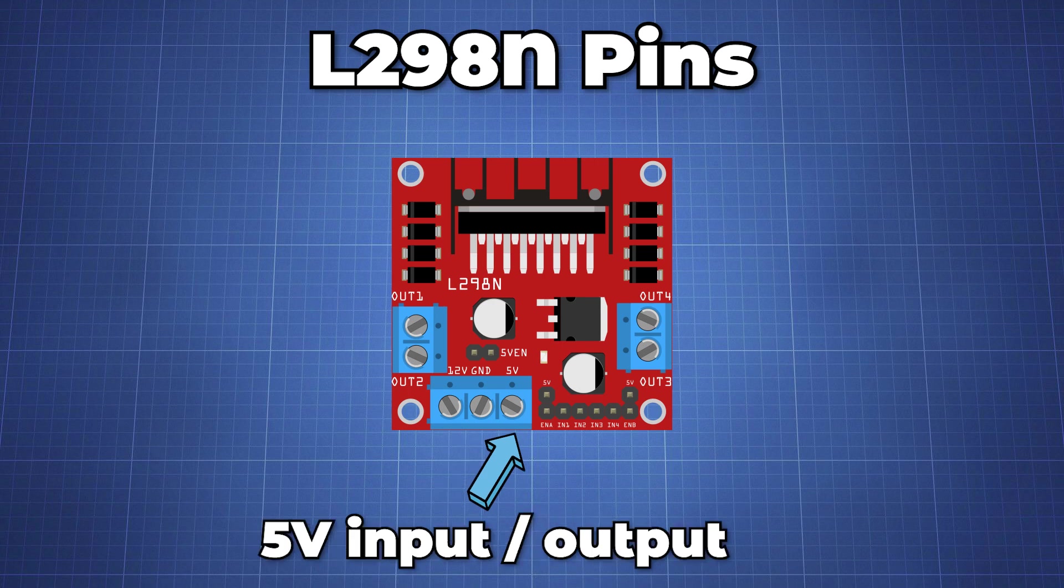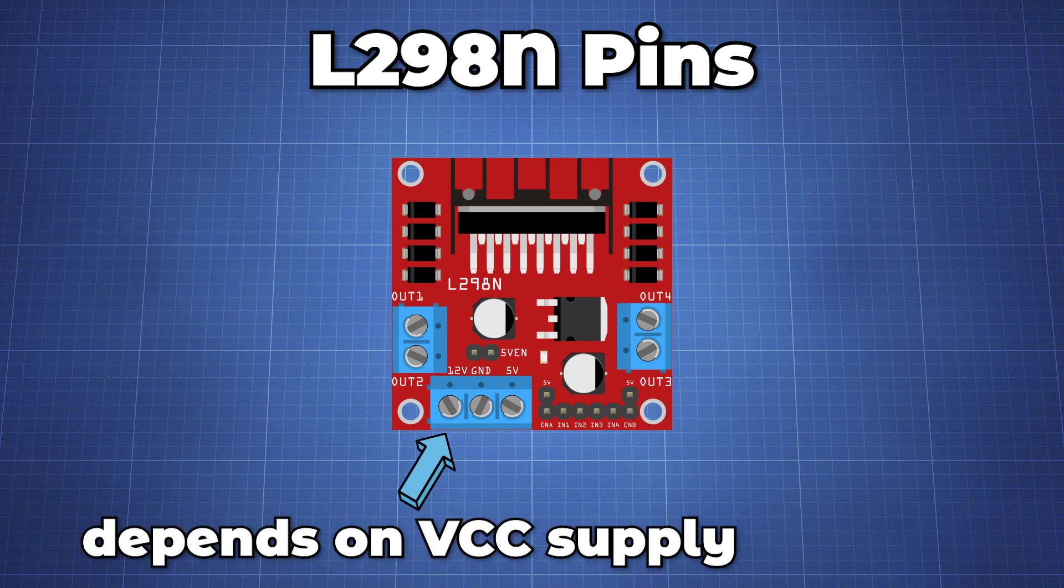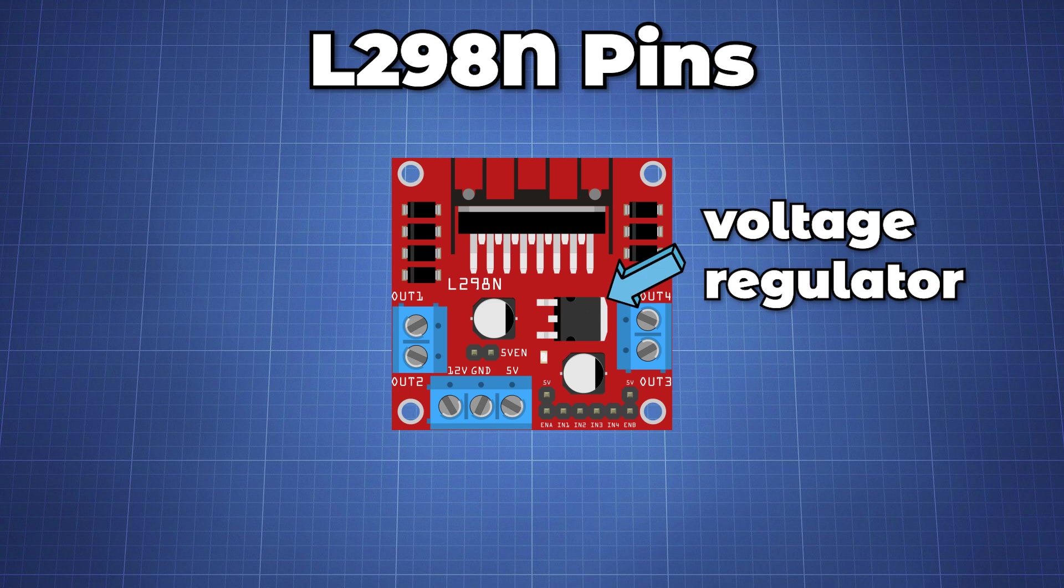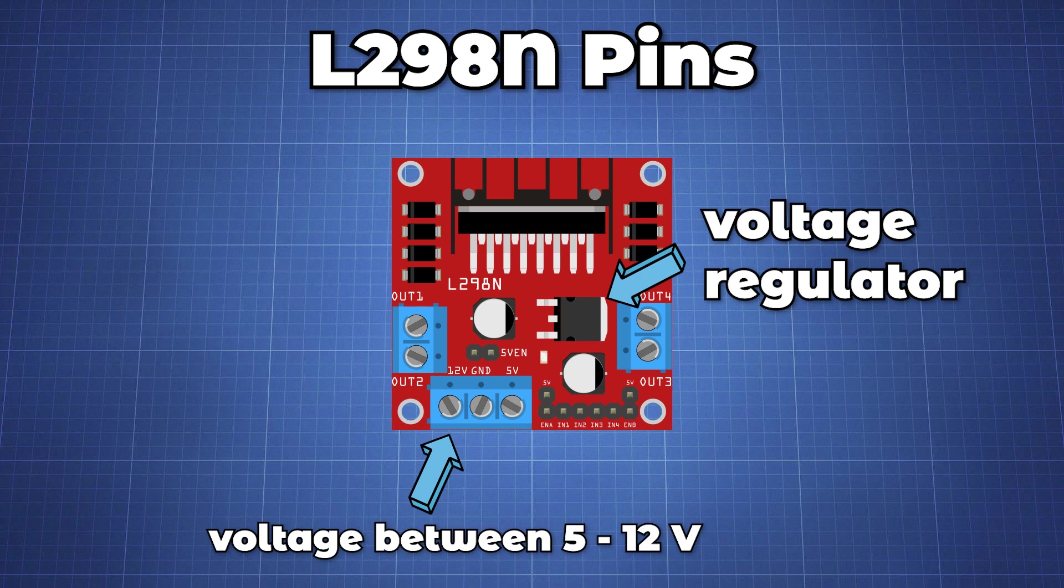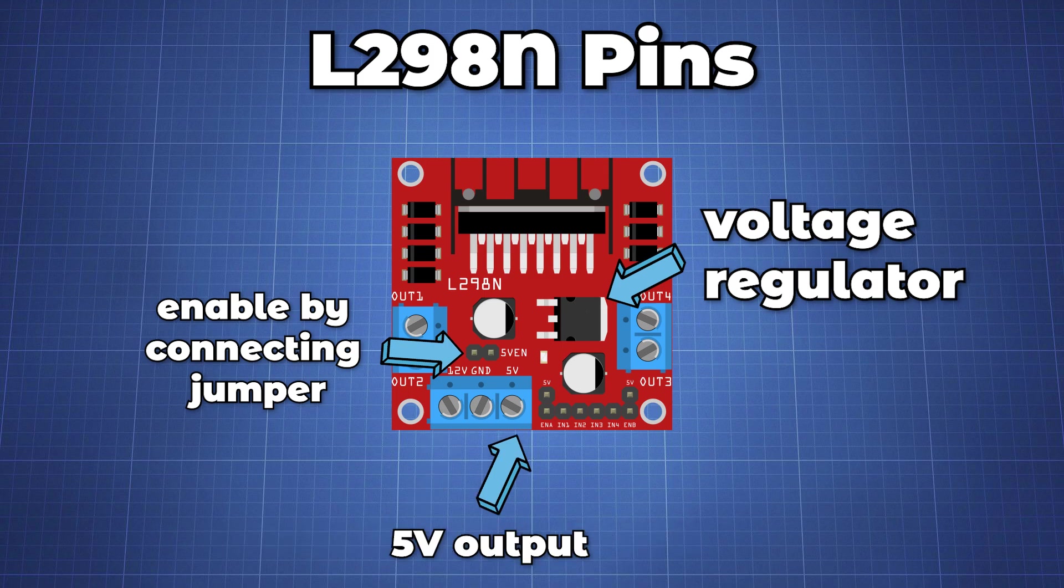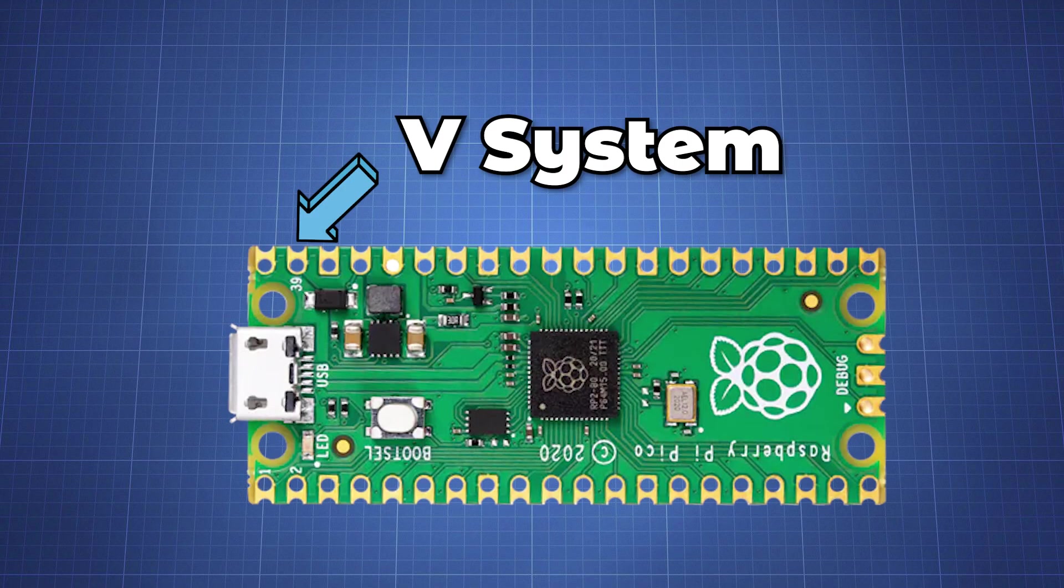There is also a 5V pin which can either be an input or an output. This depends on the voltage used at the motors VCC. The module has an onboard 5V regulator which is either enabled or disabled using a jumper. If the supply voltage VSS is between 5V to 12V we can enable the 5V regulator and the 5V pin can be used as an output for example for powering our Pico board.